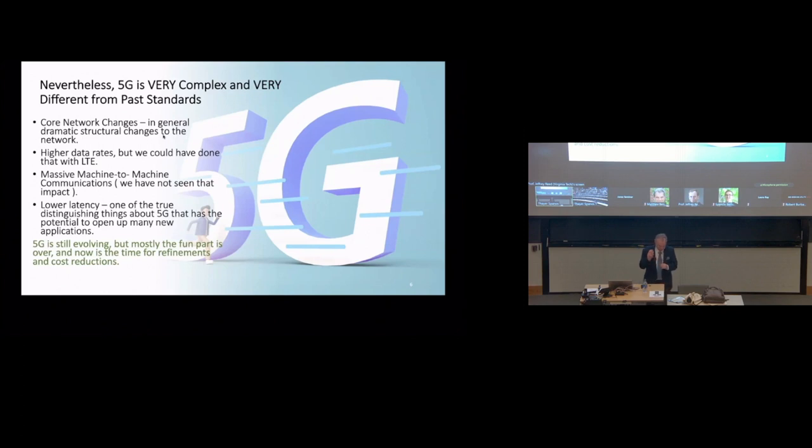5G was developed with three key things in mind. One is higher data rates. The second one was being able to support massive machine-to-machine communications. And the specifications for that from the International Telecommunication Union called for one million devices to be connected per square kilometer. I haven't seen that yet. And frankly, I don't think I will see that until 6G comes along or shortly before 6G comes along at best.